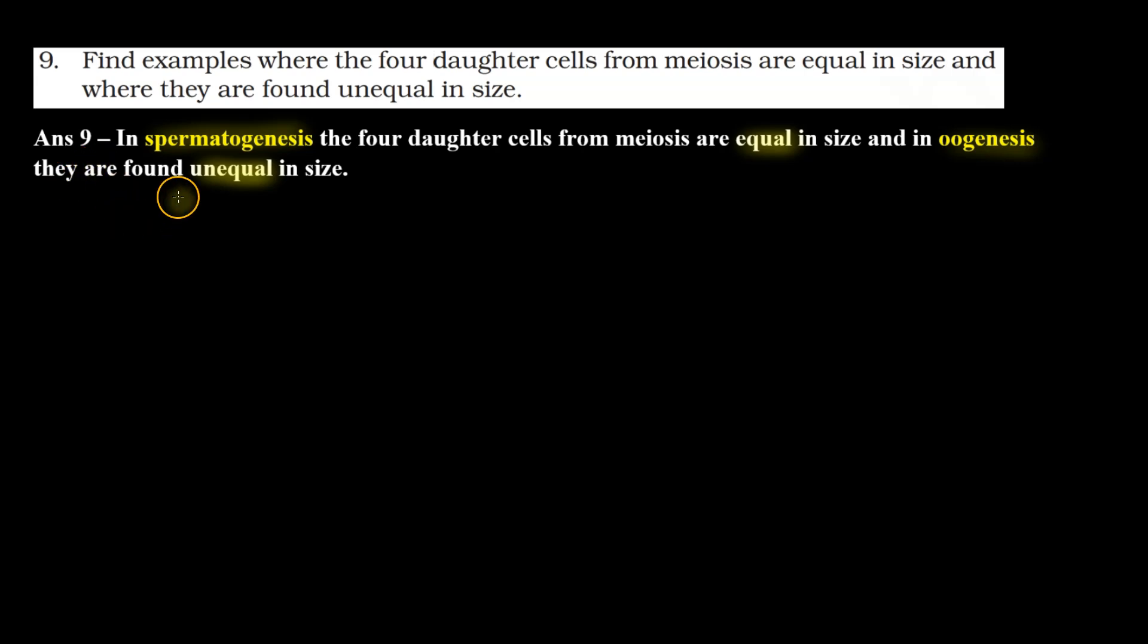Clear? So answer number 9 is: in spermatogenesis, the four daughter cells from meiosis are equal in size, and in oogenesis, they are found unequal in size. So I hope this question is clear to you. Thank you.